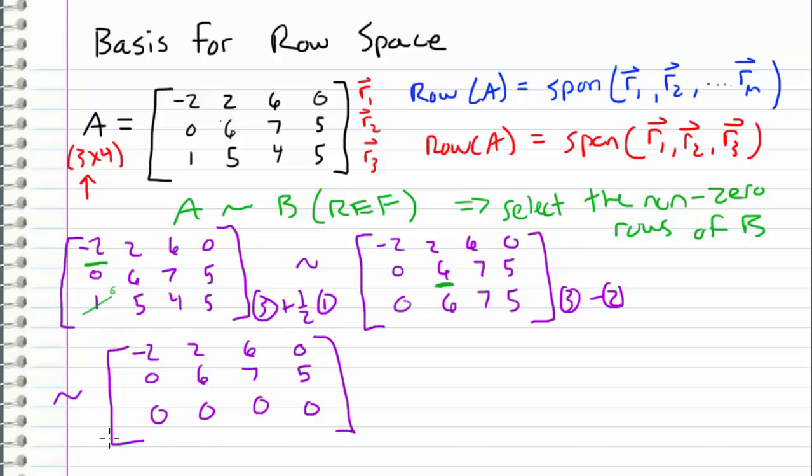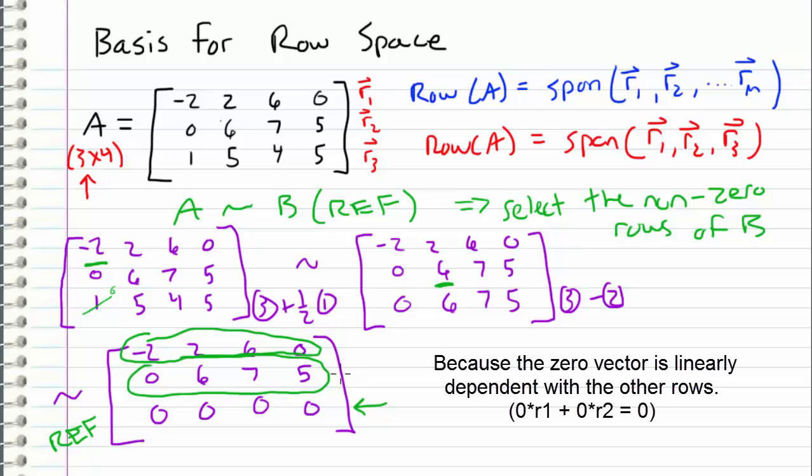So this is the row echelon form of the matrix. So now all I have to do is select the non-zero rows, and those are just rows 1 and rows 2. Row 3 is made up of all zeros, therefore we don't pick it as a basis vector.